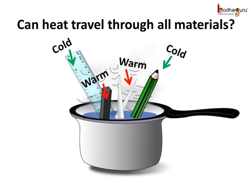But the other ends of the plastic scale and wooden pencil are cold. So here the heat did not transfer. Now, coming to the pair of scissors, its ends also feel warm, though not in contact with the hot water. So we see, heat can travel through steel and also iron, as we saw in the case of the iron bar.